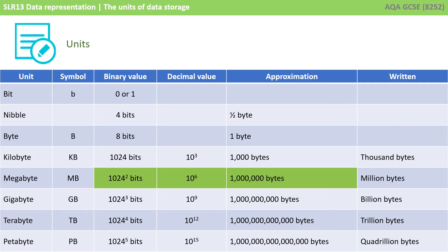Now, in order to explain the background to all this, this video has become a little more complex than it really needs to be for your exams. For the purpose of exams, it's probably easiest to remember the sequence: kilo, mega, giga, tera, peta. If you know that a kilo is 1,000 — three zeros — just add three zeros each time to the unit. Therefore, a mega is 6 zeros, a giga is 9, a tera is 12, and a peta is 15 zeros.